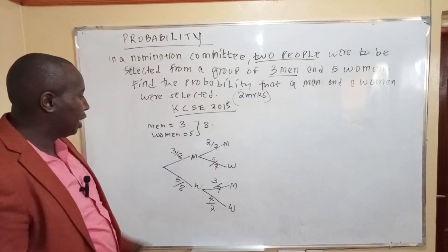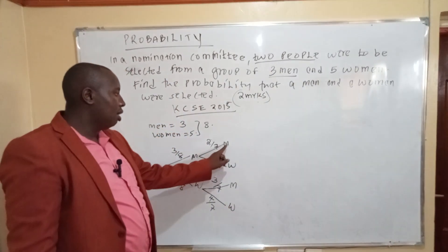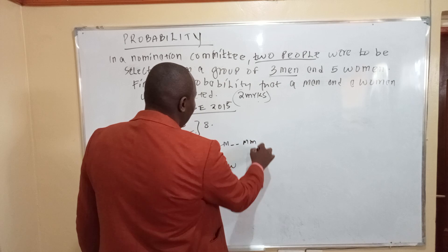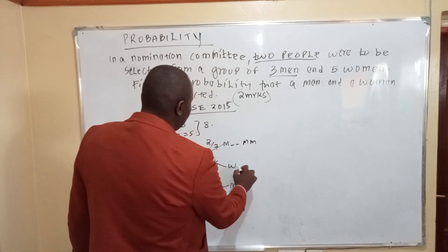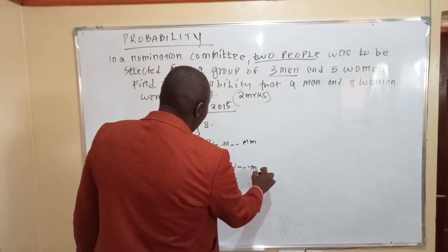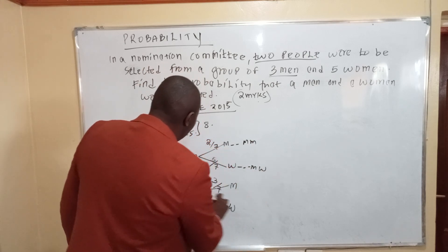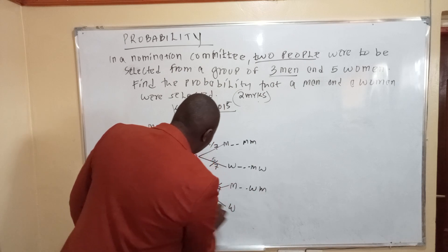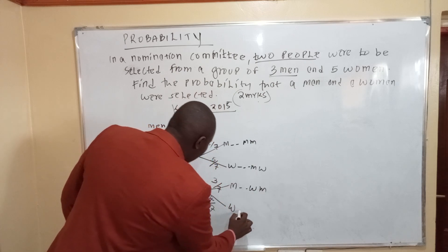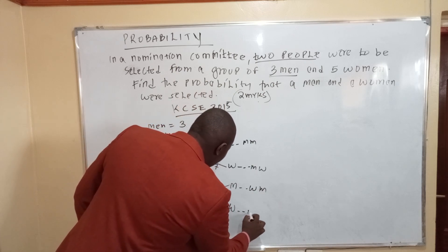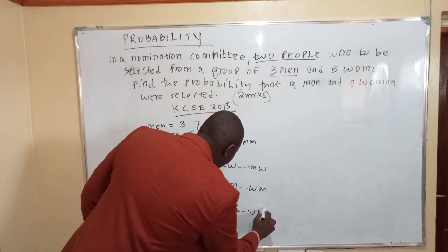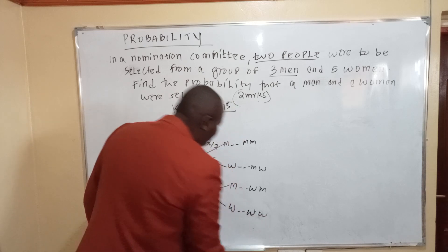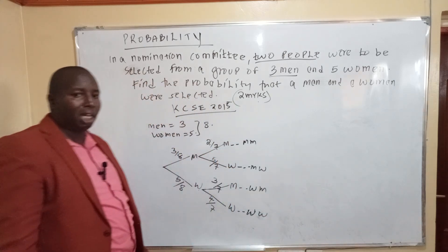So with two people selected, the possible outcomes are: man-man, man-woman, woman-man, and woman-woman.